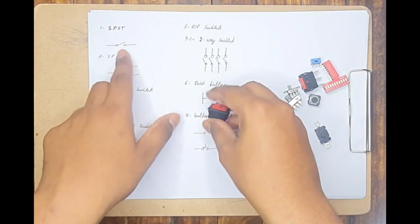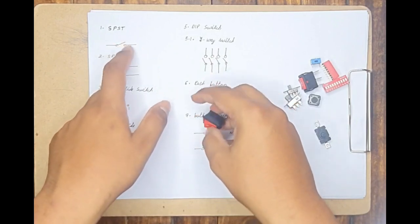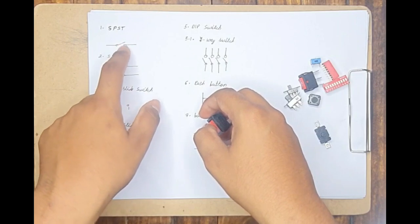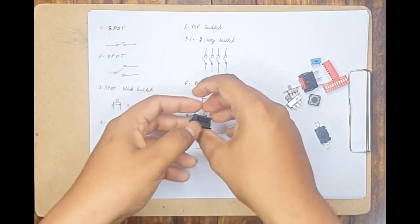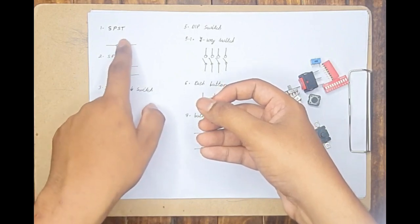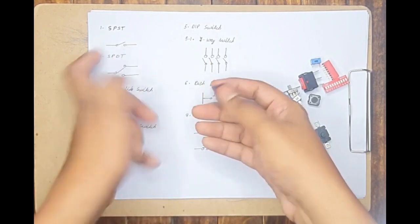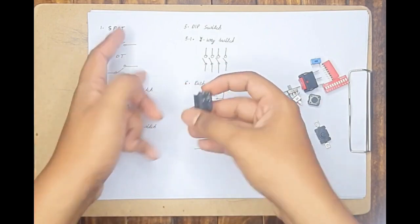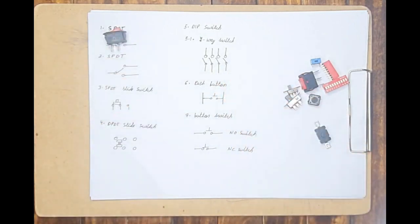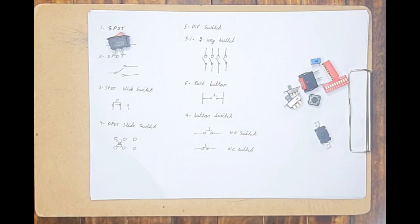In general it has only two terminals and one slider. Now what we mean by single pole is the number of sliders it has internally, and throw means the number of positions it can go. In this state it can only touch one terminal so it has only one position, but it has two stages. Whenever the slider is in this position it is generally in off state, but whenever I close the slider it will be in on state, that is a closed circuit state and an open state. By this we can predict the number of states the switch can produce.